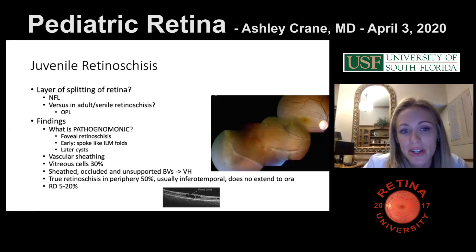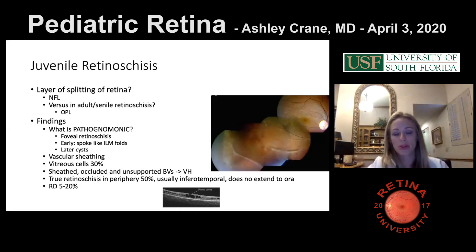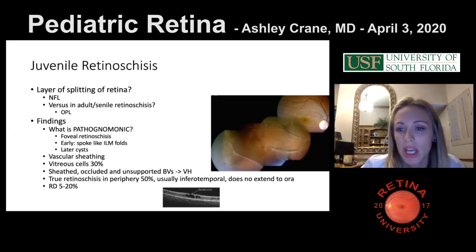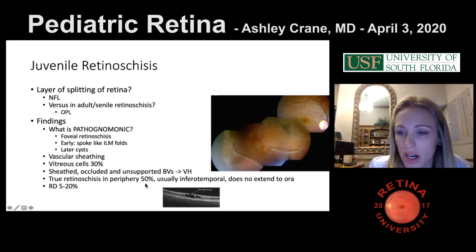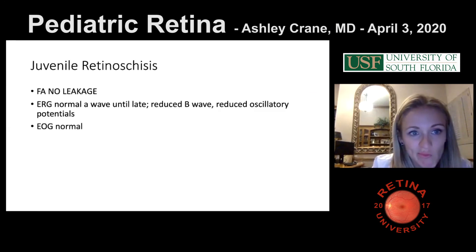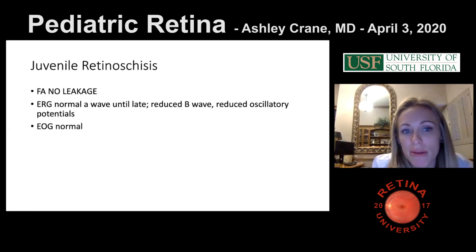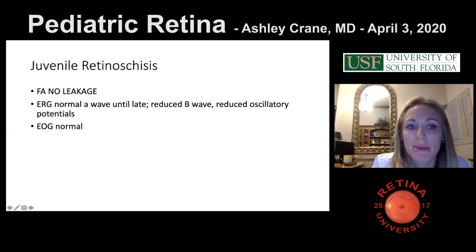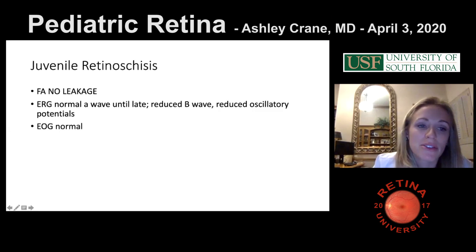There is vascular sheathing in some of these patients and vitreous cells. Blood vessels that are unsupported can cause vitreous hemorrhage. RDs are not uncommon. There is no leakage. The ERG has a normal A wave until late, a reduced B wave, and reduced oscillatory potentials. The EOG is normal.